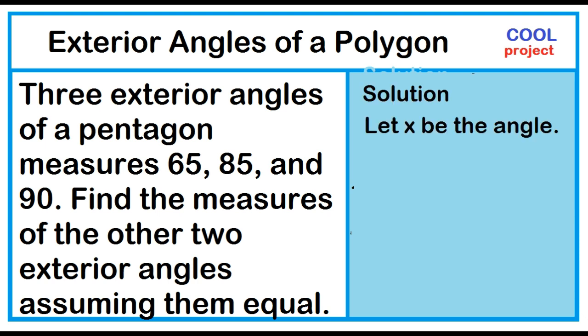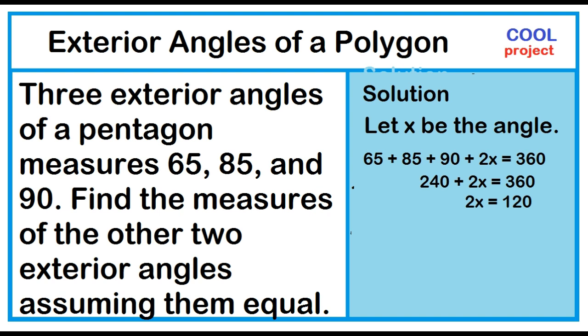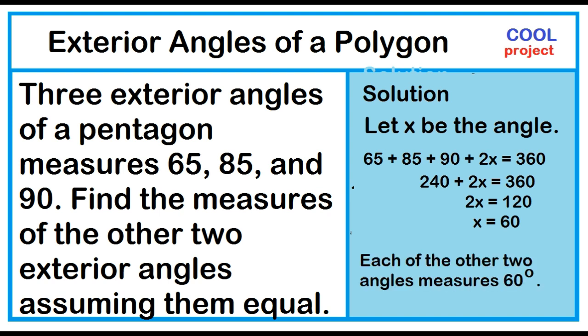Solution: Let x be the unknown angle. 65 plus 85 plus 90 plus 2x equals 360. Combining like terms: 240 plus 2x equals 360. Subtract 240 from both sides: 2x equals 120. Divide both sides by 2: x equals 60. Each of the other two angles measures 60 degrees.